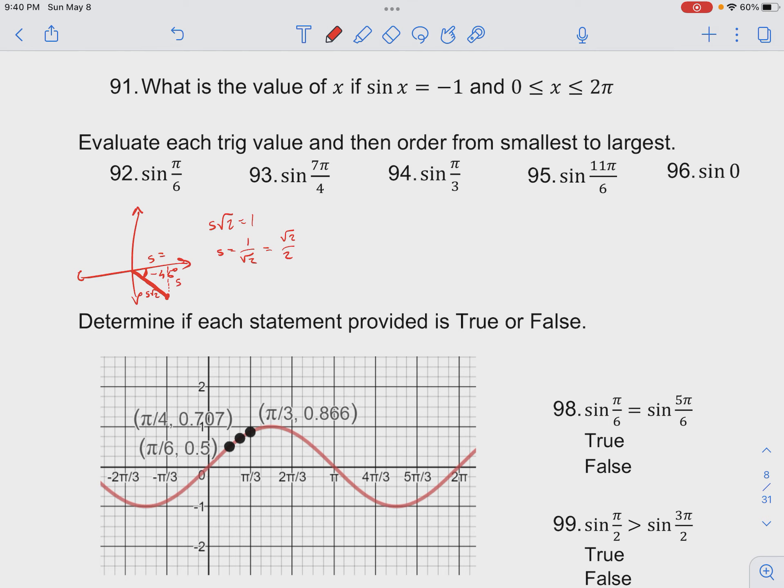So our side lengths are equal to √2 over 2. And so sine of this theta is going to be opposite over hypotenuse, which is in the y direction. We have negative √2 over 2 divided by hypotenuse of 1.